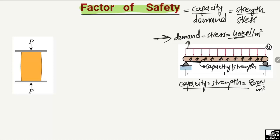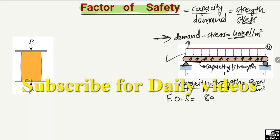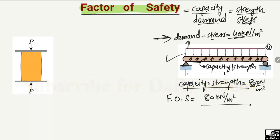The ratio of these two terms gives us the factor of safety for this beam. Factor of safety equals capacity divided by demand — that is, strength divided by stress. So: 80 kN/m² divided by 40 kN/m². The units cancel, giving us 2. The factor of safety for this beam section is 2.